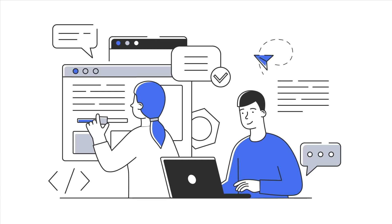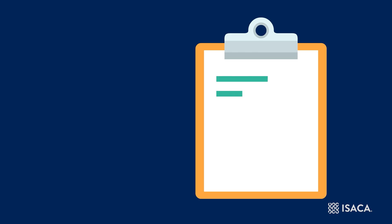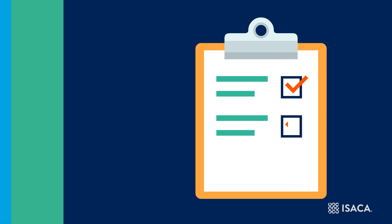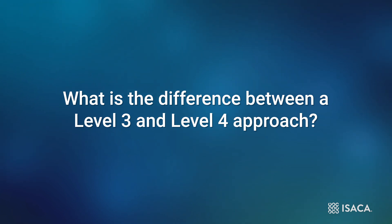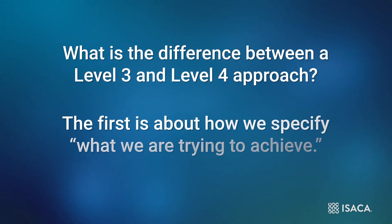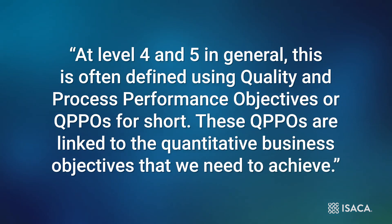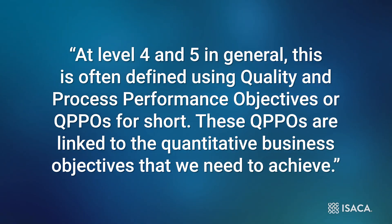Understanding what outcomes we are trying to achieve is a necessary first step in addressing SAM 4.1. As we have seen, the SAM 3.2 practice provides the basis for evaluating this. But what is the difference between a level 3 approach and a level 4 approach? Let us look at two areas where they differ. The first is about how we specify what we are trying to achieve. At levels 4 and 5 in general, this is often defined using Quality and Process Performance Objectives, or QPPOs for short. These QPPOs are linked to the quantitative business objectives we need to achieve.